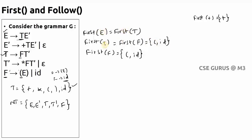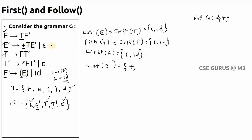So First(E) = First(T) = First(F) = { '(', id }. Now for E-dash: locate E-dash on the left-hand side. The rightmost leftmost symbol of one production is plus, a terminal — write it. The other production is E-dash → epsilon, so epsilon is also included. Therefore First(E-dash) = { +, ε }.